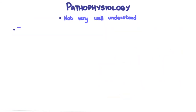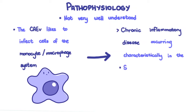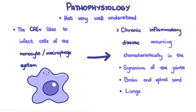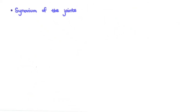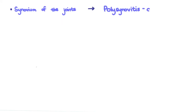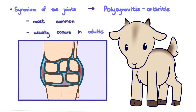The pathophysiology is not very well understood. The caprine arthritis encephalitis virus likes to infect cells of the monocyte-macrophage system, resulting in chronic inflammatory disease occurring characteristically in the synovium of the joints, brain and spinal cord, lungs, and other tissues. Inflammation of the synovium of affected joints, or polysynovitis arthritis, is most common and usually occurs in adults. The synovium is thickened and there is infiltration of numerous macrophages and lymphocytes.